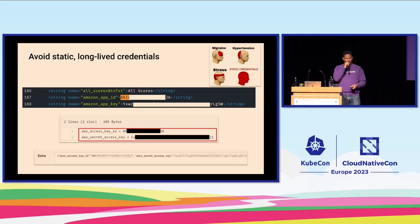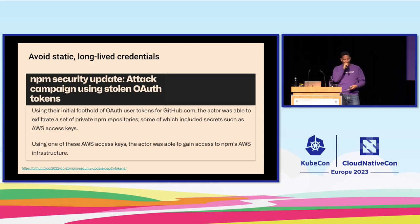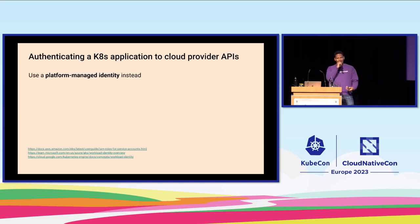There are easier and more secure ways. Interacting with cloud provider secrets is much better. Remember the npm security breach where a static token was stolen, giving access to other repos and cloud credentials. It's better to use a platform-managed entity — have your workload identify natively with your cloud service instead of using static credentials. Use AWS IAM roles for service accounts, workload identity on GKE, or Azure AD workload identity.